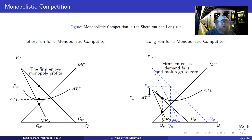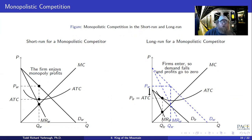The most common market structure as it pertains to number of businesses would be markets which are monopolistically competitive. So what does monopolistically competitive mean? The big thing with monopolistic competition is that we take perfect competition and those four assumptions and we remove the homogenous goods assumption.